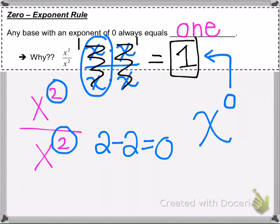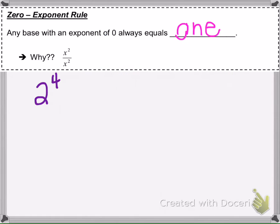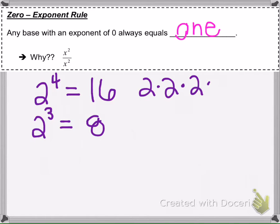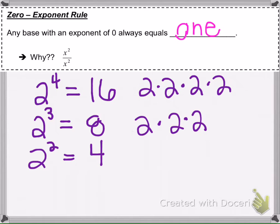like if we add a positive exponent, like 2 to the fourth power has a positive exponent, that equals 16. And then 2 to the third power, that equals 8 because it's telling us how many times to multiply the base. And then if we add 2 to the second power, that's 4 because 2 times 2, that's what it represents.